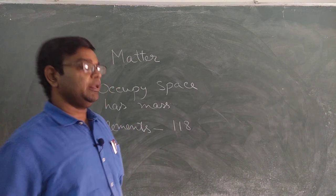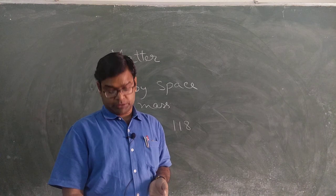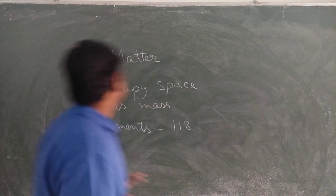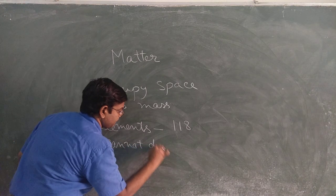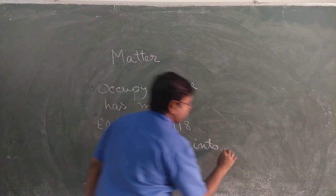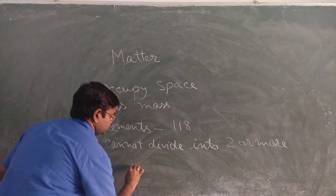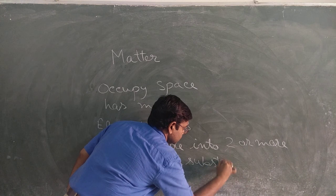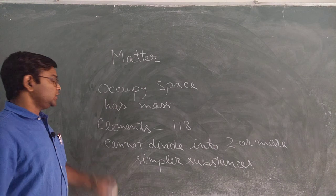What are elements? An element is defined as a substance which cannot be divided into two or more simpler substances. Elements cannot be divided into two or more simpler substances — these are known as your elements.